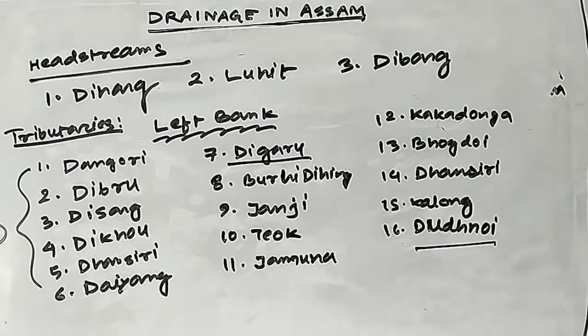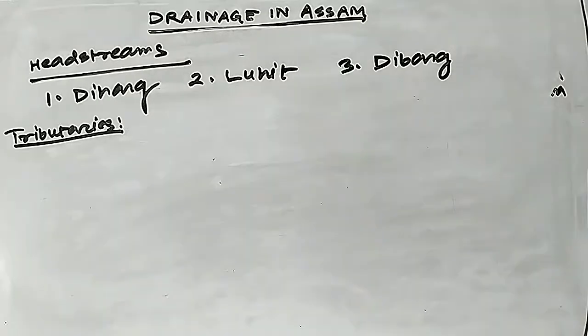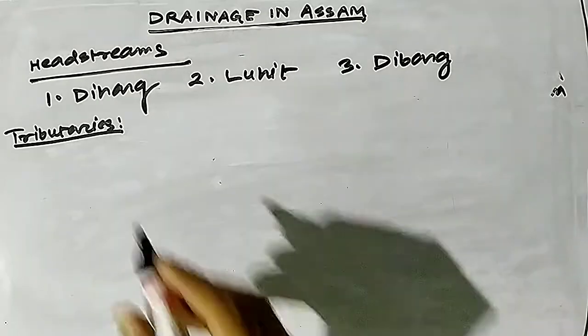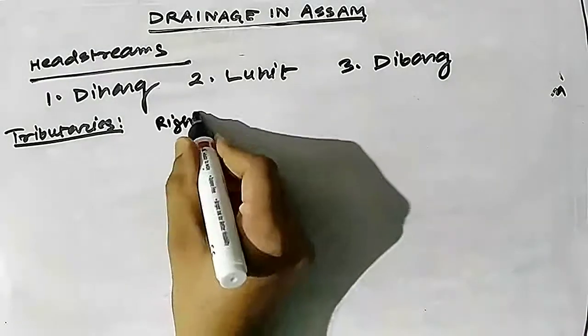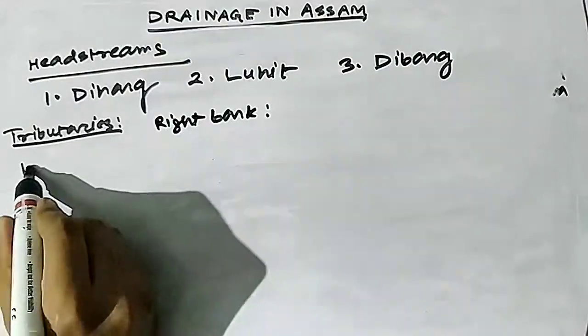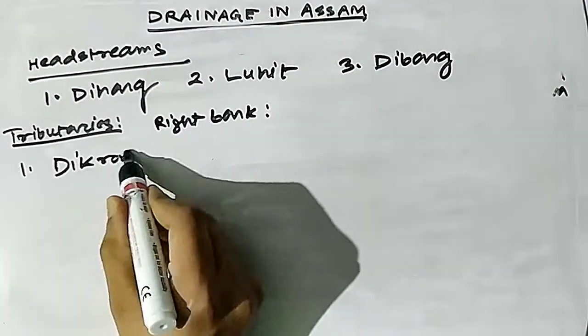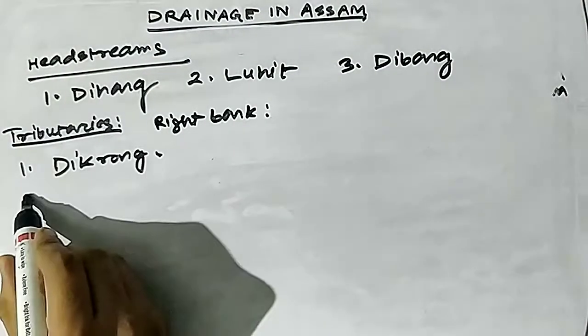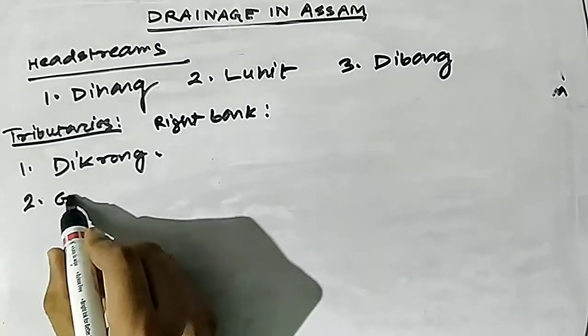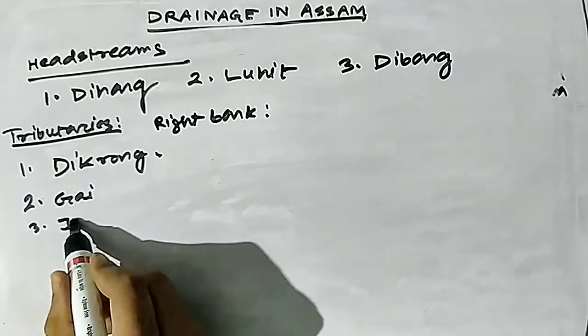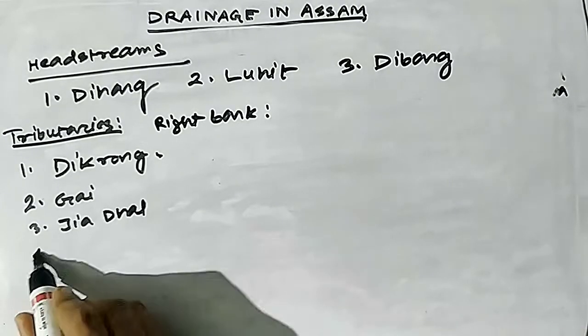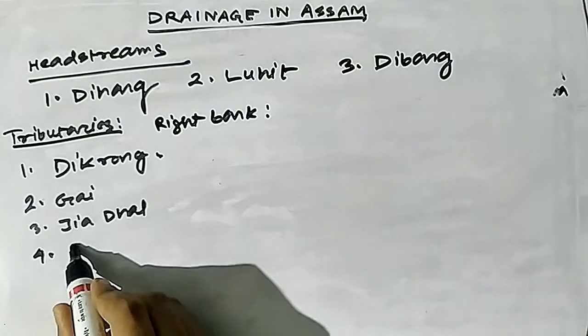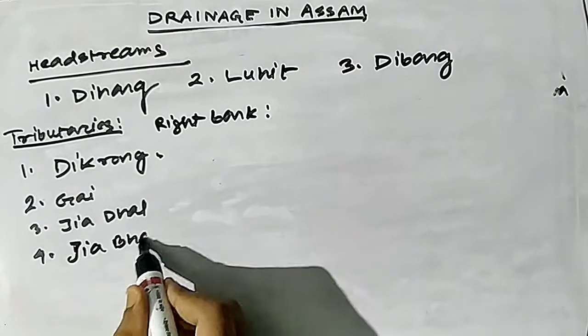For the right bank tributaries, Dikrong is the major river to note.